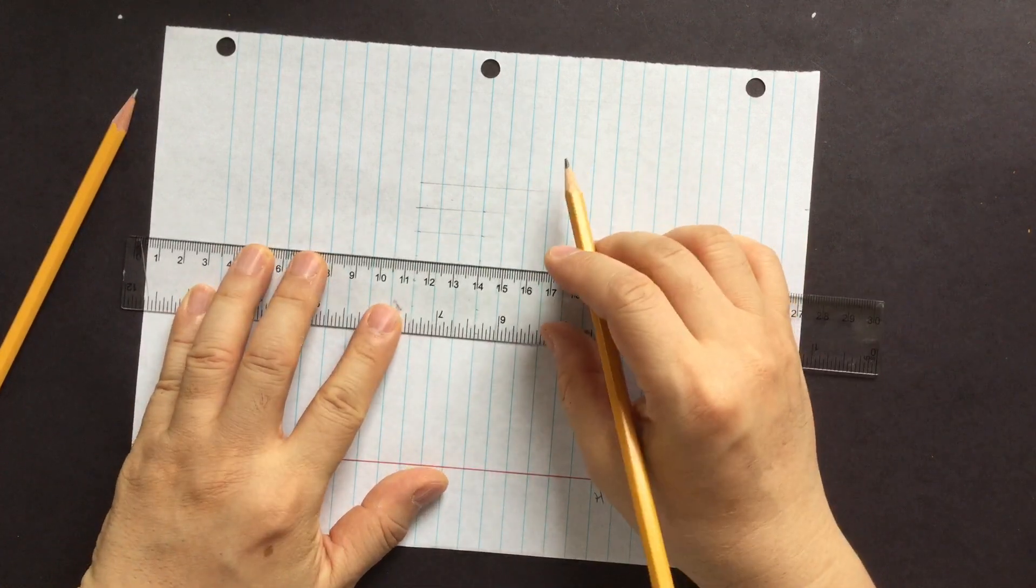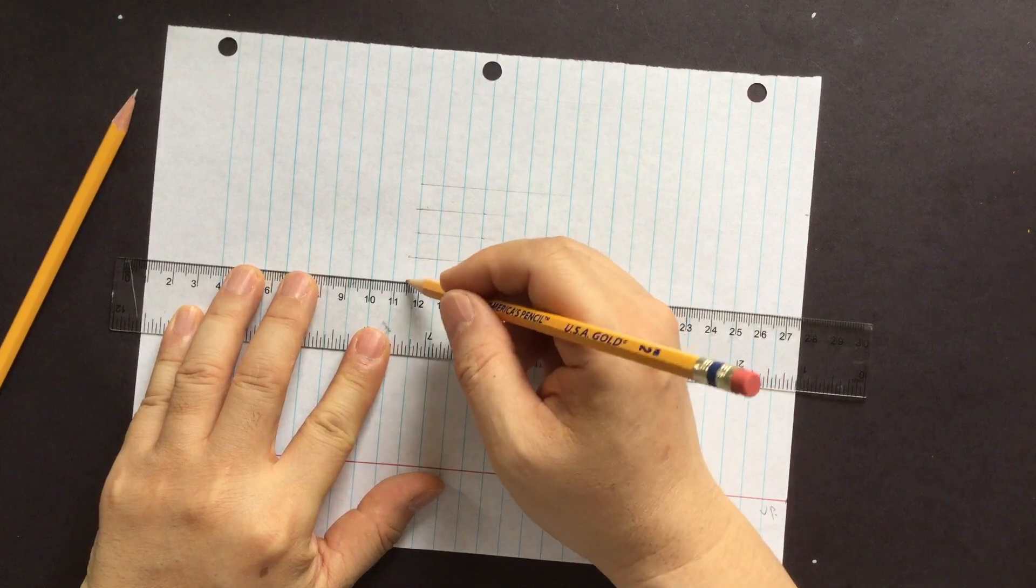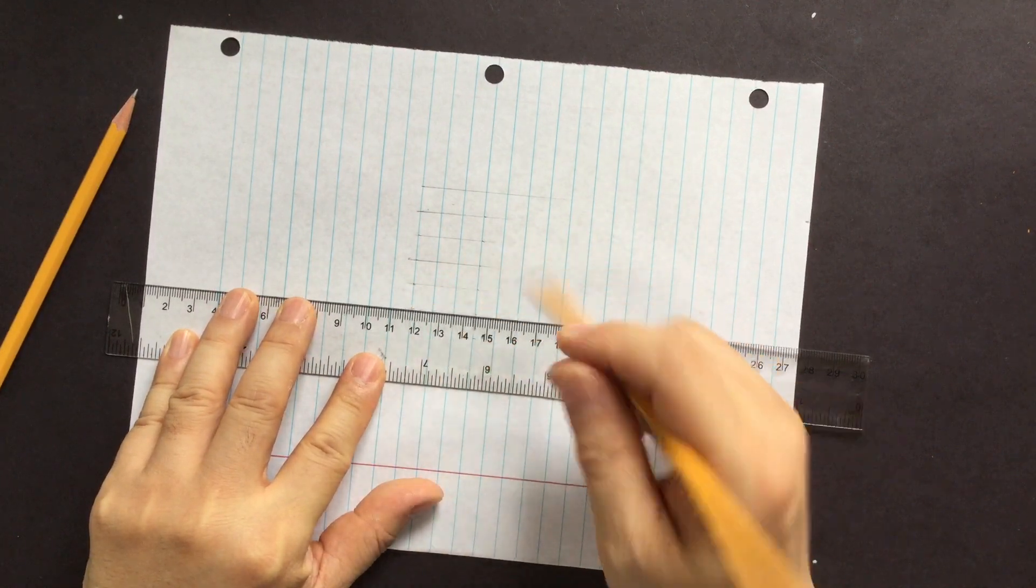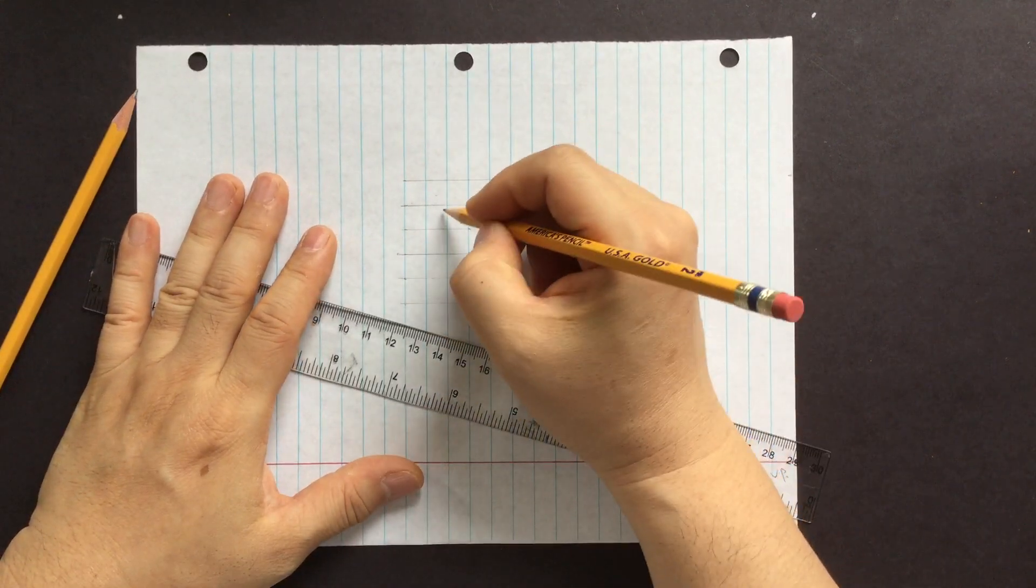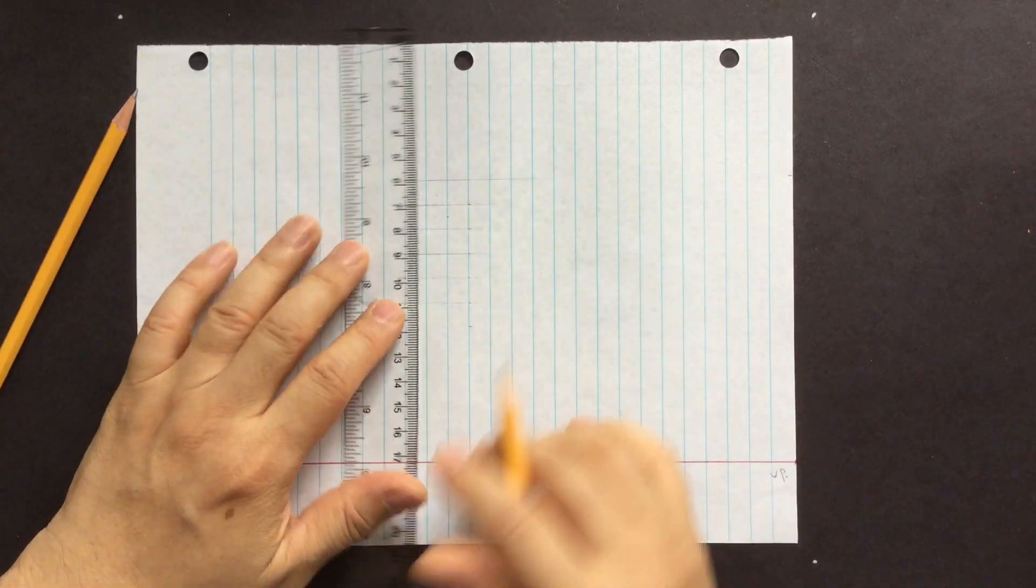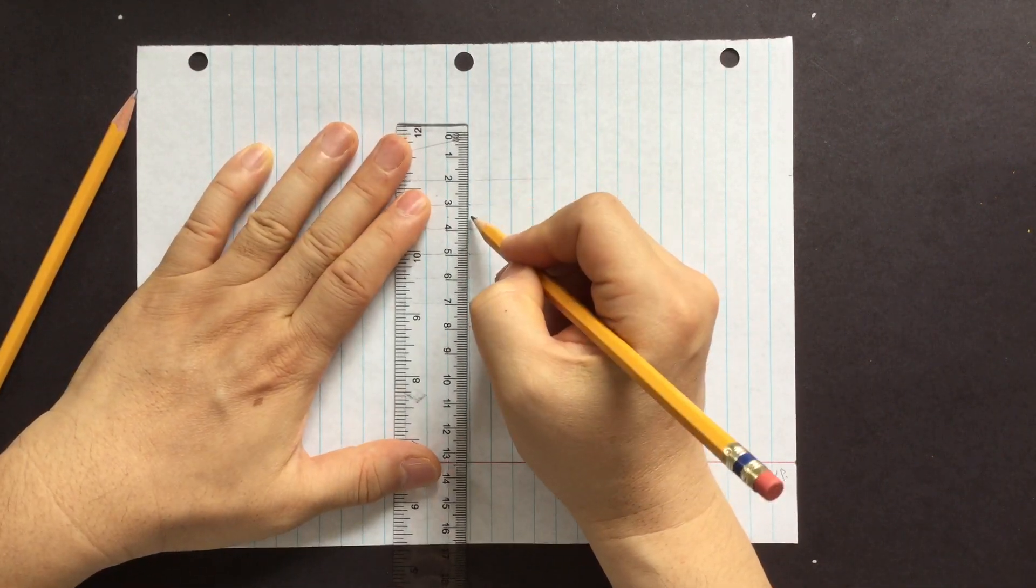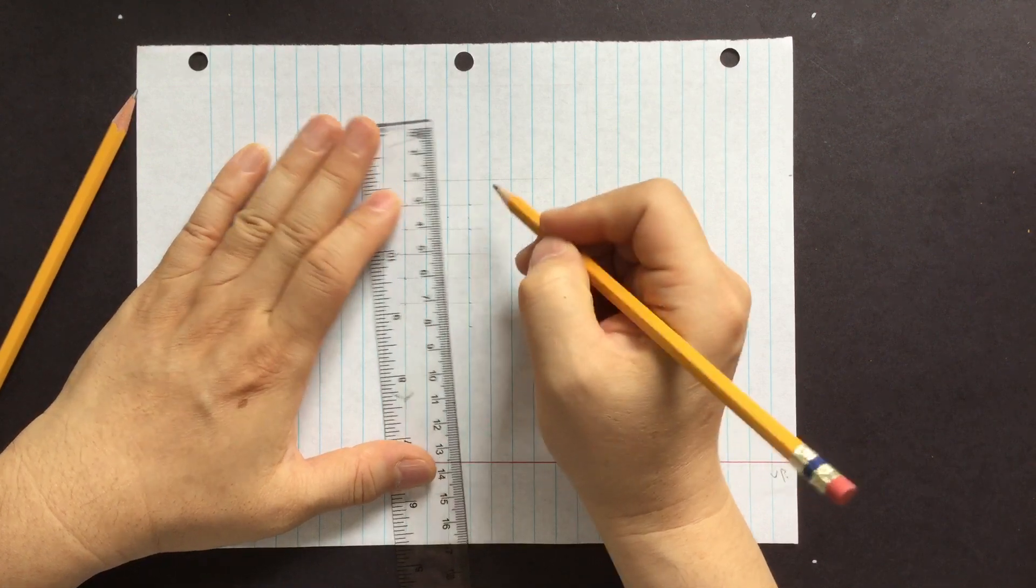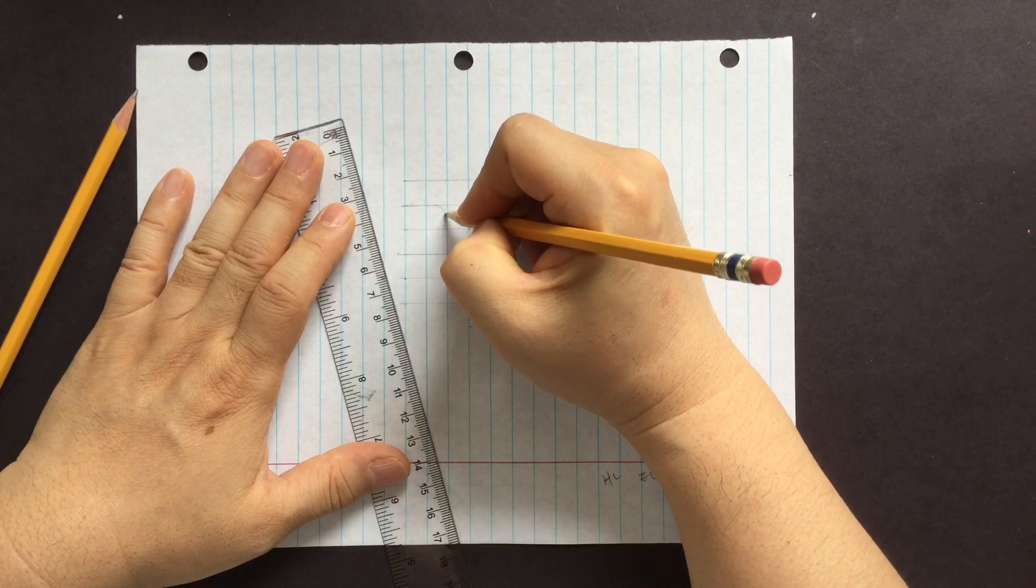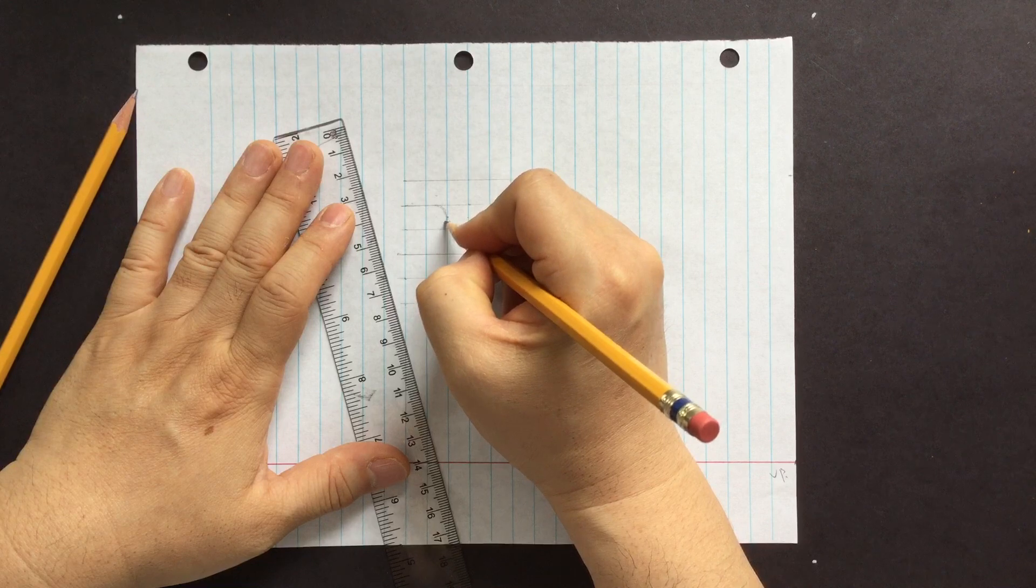But do it very lightly so later we can erase the lines that we don't need. Okay, so now next job you want to do is find the middle. Right, that's the middle. And find the middle. Right, and then that's gonna be the circle.